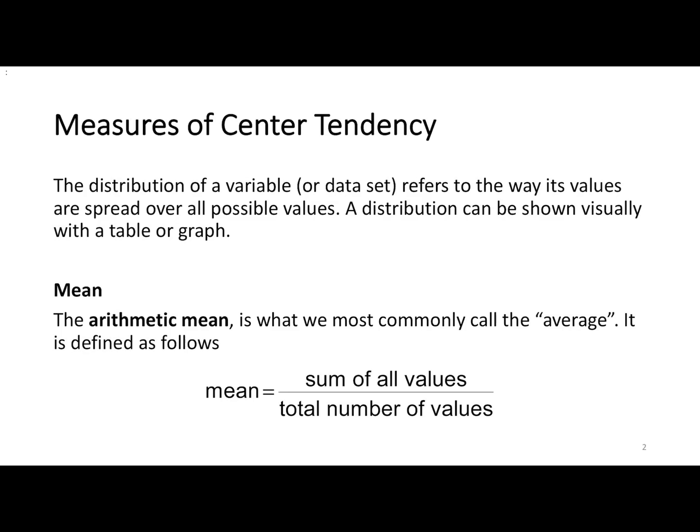Measures of central tendency - what's happening with the data around the center. You have the arithmetic mean, which we typically call the mean or the average. Basically, you add up all your values and divide by the total number you have.